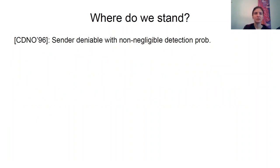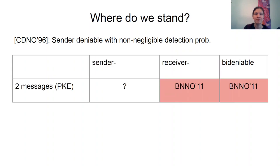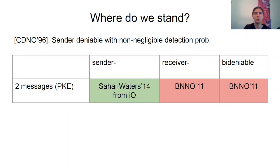Let me talk about some prior work. The original paper which introduced deniable encryption also gave the first construction of sender deniable encryption. However, the detection probability there was not negligible — it was inverse polynomial in the size of the ciphertext, which means that to get negligible advantage, you have to send superpolynomially large ciphertext. The study then came with an impossibility result by Bendlin et al., which said that receiver deniable encryption is impossible in two rounds, and this automatically means that bi-deniable encryption in two rounds is impossible as well. A couple of years later, in a beautiful paper, Sahai and Waters showed how to build standard deniable encryption from obfuscation.